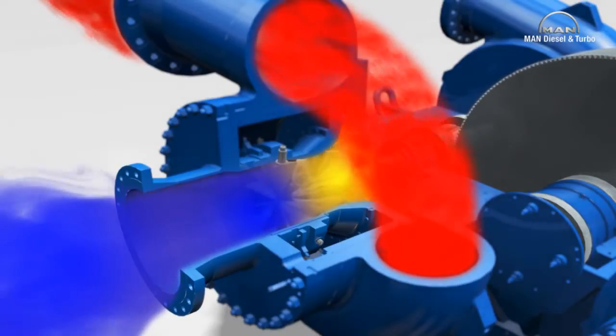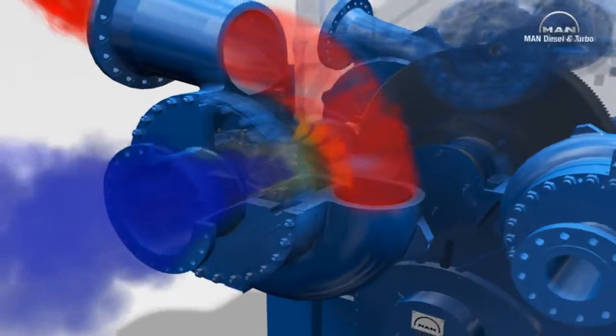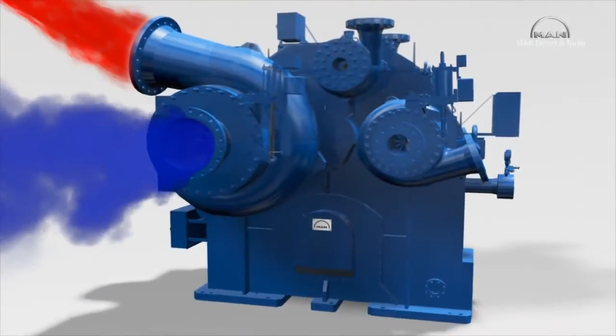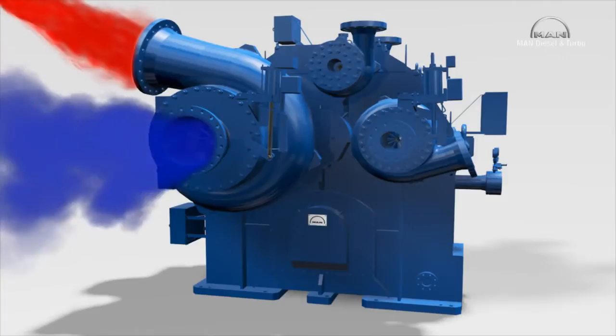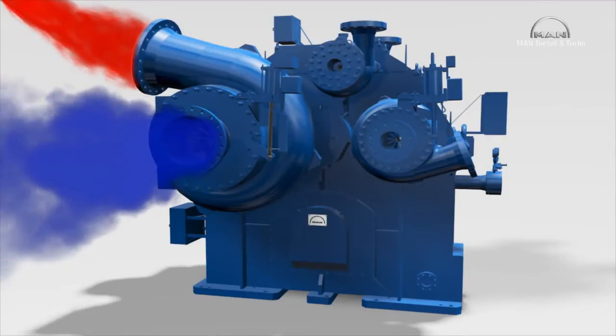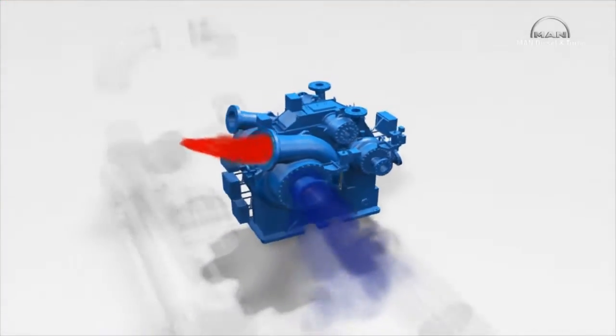The volute then collects the gas. With each compression, the gas temperature rises. This in turn somewhat reduces the density and increases the volume. Because this means that the following compression process would then require more energy, the gas flows after each stage through piping to an intercooler, that reduces the gas temperature before the gas enters the next stage.